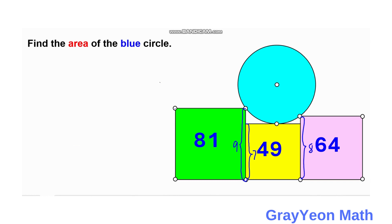Since the green square has side 9 and the yellow has side 7, the difference is 9 minus 7 equals 2. So this vertical segment is 2, and if we project that, this is also 2. For the lavender and the yellow squares, we have sides 8 and 7, so 8 minus 7 equals 1. This segment is 1.